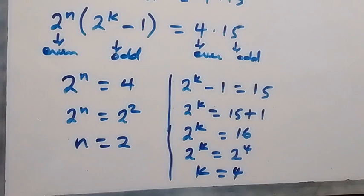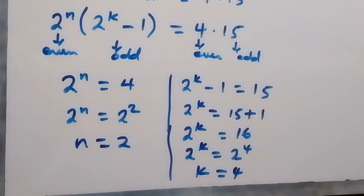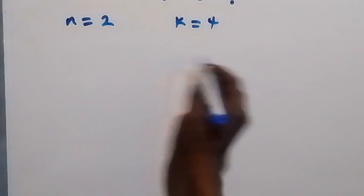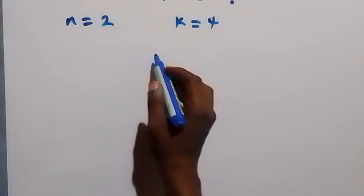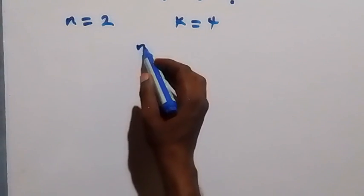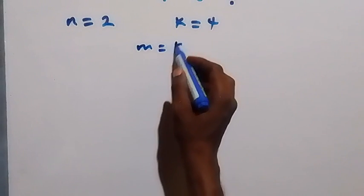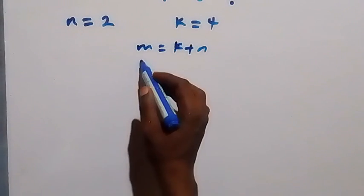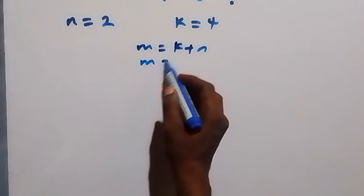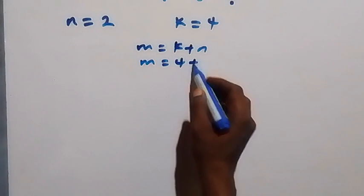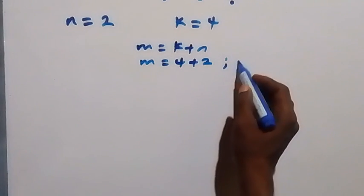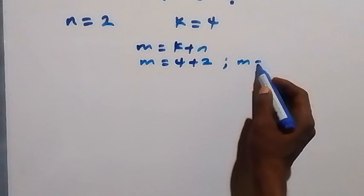Since we now have the values of n and k, we can find m. Since m equals k plus n, we have m equals 4 plus 2, so m equals 6.